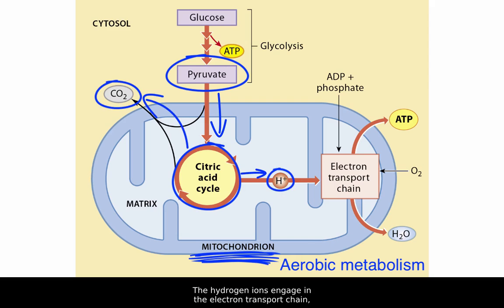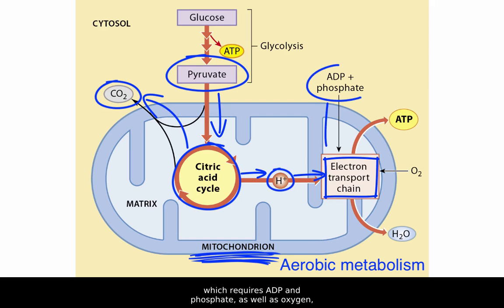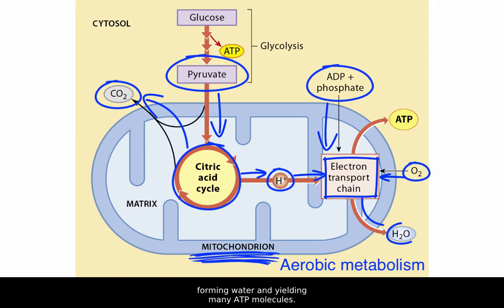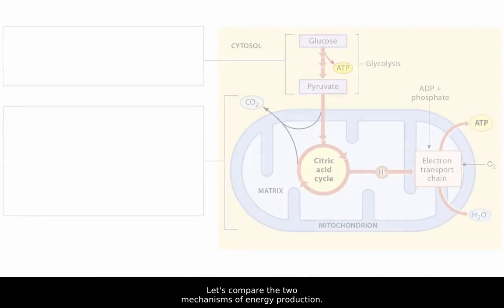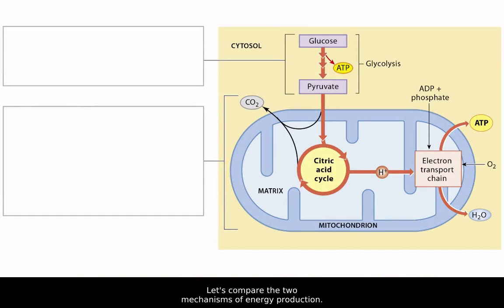The hydrogen ions engage in the electron transport chain, which requires ADP and phosphate, as well as oxygen, forming water and yielding many ATP molecules.